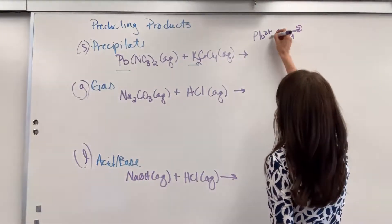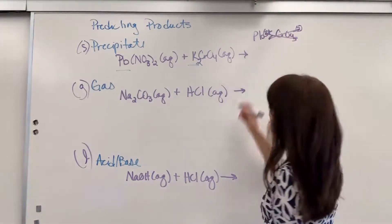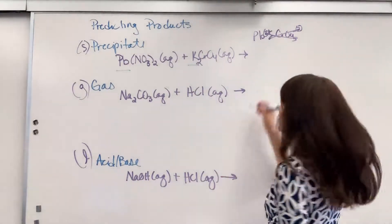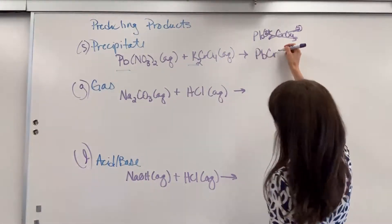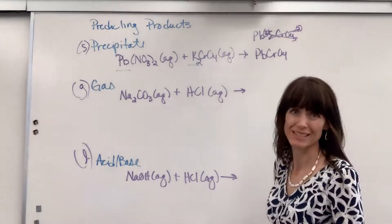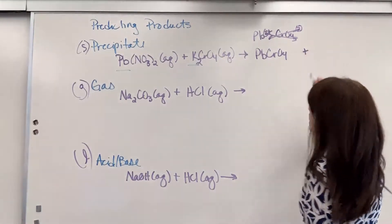If I cross that up, that would be CrO4, and you might have these memorized. Cross these down. The two and a two, that balances out. So, it's lead to chromate, excuse me, PbCrO4. Great. Plus.